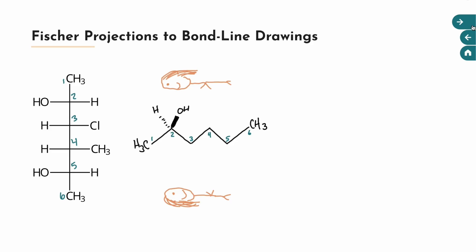Moving to the next carbon: you have chlorine in your right hand and hydrogen in your left hand. This carbon on the skeletal structure is pointing down, so you imagine yourself below the molecule. The chlorine in your right hand is now pointing out of the page on a wedge, and the hydrogen in your left hand is pointing into the page on a dash. Next carbon: you have a right-hand methyl and a left-hand hydrogen, and you are above the molecule. So the methyl goes into the page on a dash, and the hydrogen comes out of the page on a wedge. Final carbon: OH in your left hand and hydrogen in your right, and you're below the molecule again — OH goes into the page on a dash, hydrogen comes out on a wedge.